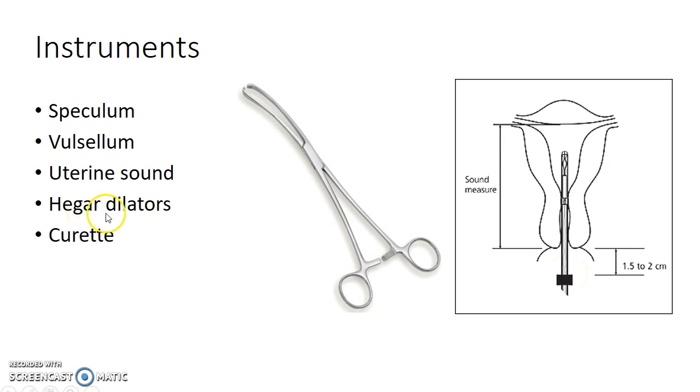The Hegar dilators are numbered from 1 to 16. The numbers indicate the diameter in millimeters.